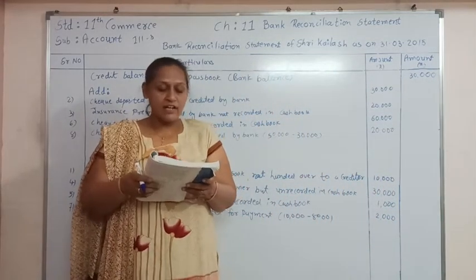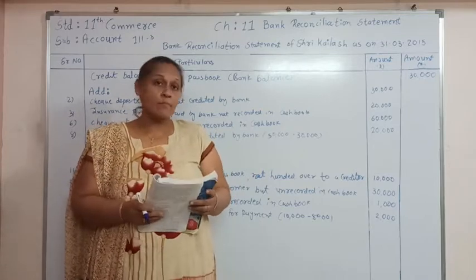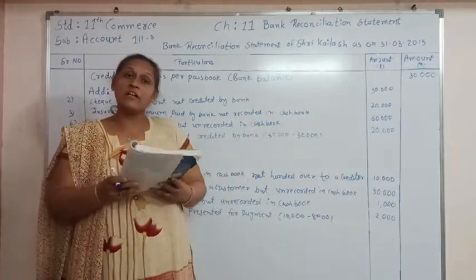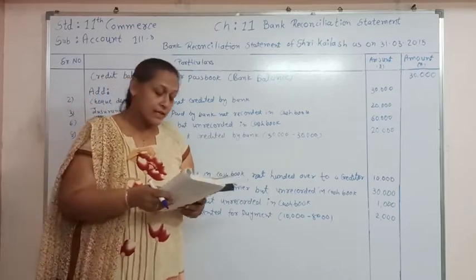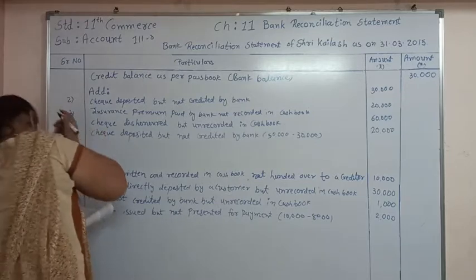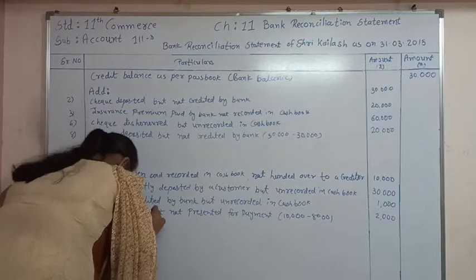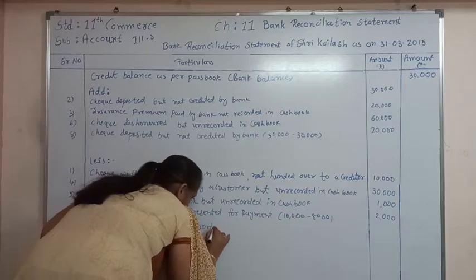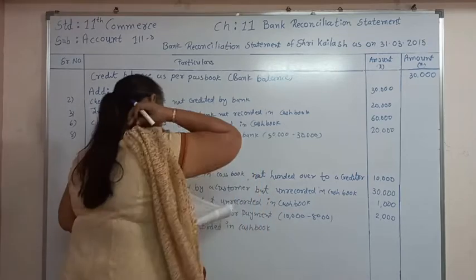Transaction number 9: a check of rupees 8,000 was deposited in the bank but was left unrecorded in the cashbook. The check is already deposited in the bank, so the passbook balance is already increased, but it is not recorded in the cashbook. So we need to make the balance less by that amount so that both balances will be the same; we deduct the amount. Entry: check deposited but not recorded in cashbook — rupees 8,000.